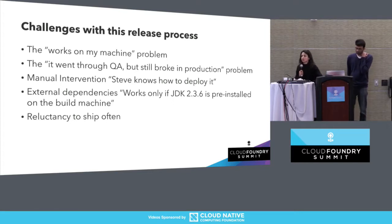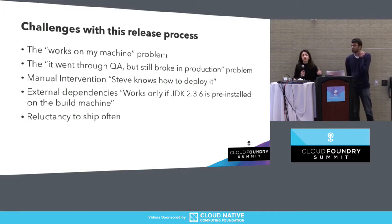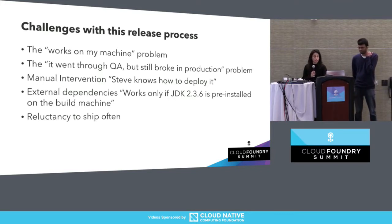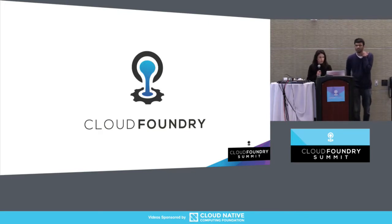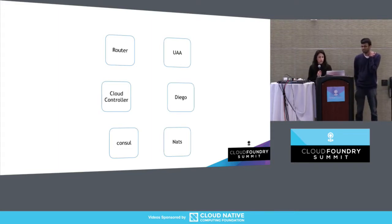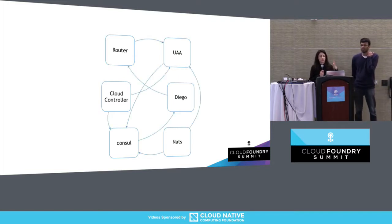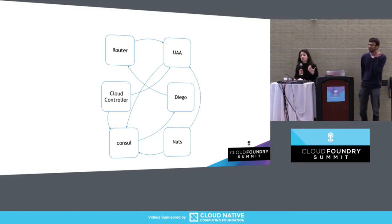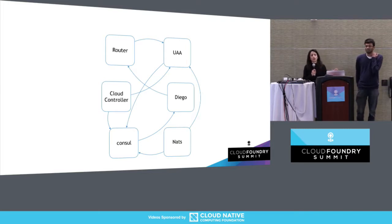Even simple release processes have traps and are quite tricky. Those challenges get magnified as systems grow in complexity, scale, and become more distributed — you might be thinking of a system like Cloud Foundry. Cloud Foundry is made up of a number of different components, deployed in many VMs, interacting with each other over different interfaces and protocols. Each component needs to be able to scale up and down without the other components noticing.